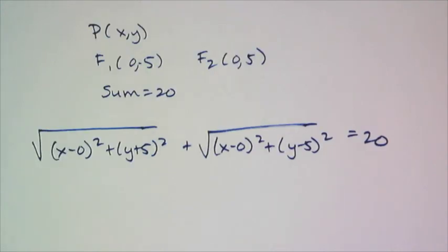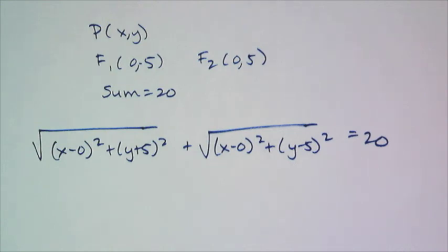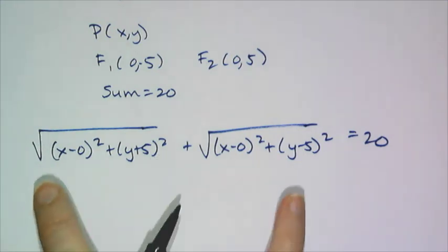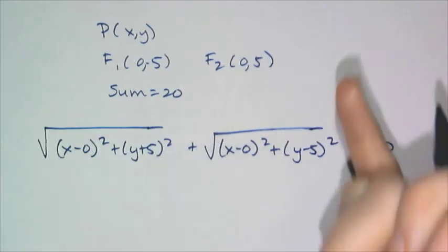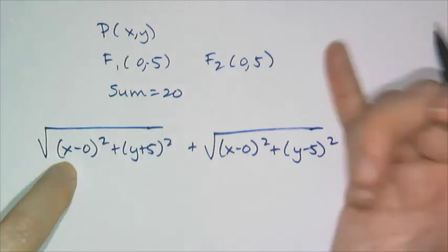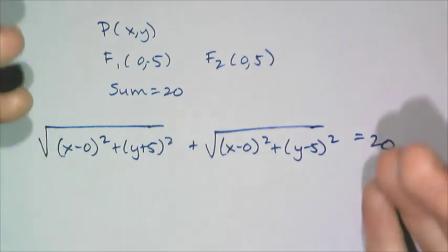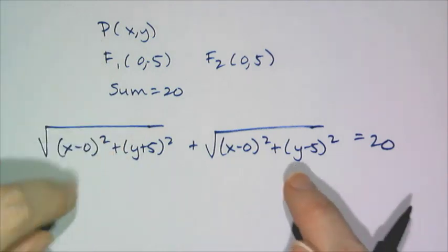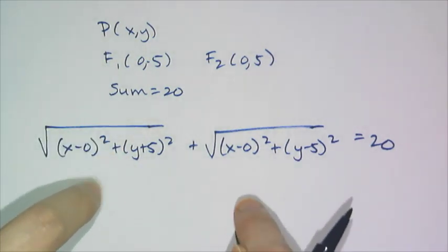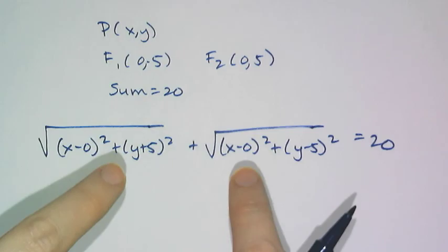By definition, this is the equation I have to get — that's technically the equation for an ellipse with these criteria, but I need to simplify it. The torture comes in because when I square this to get rid of the square root, this is a binomial, so I have to square each term and double their product, and I still get a radical. To eliminate both radicals, I'm going to have to square twice.